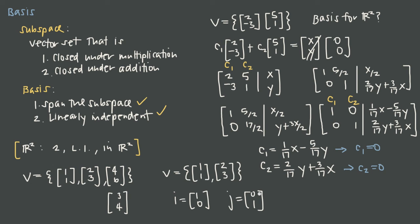Any two linearly independent vectors in R2 can form a basis for R2 — you don't have to use the standard basis. The same is true for R3: you don't have to use the standard basis vectors I=[1,0,0], J=[0,1,0], and K=[0,0,1]. Any three linearly independent vectors defined in R3 can form a basis for the subspace R3.